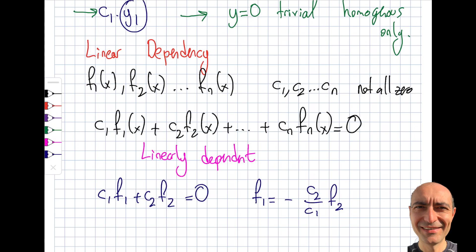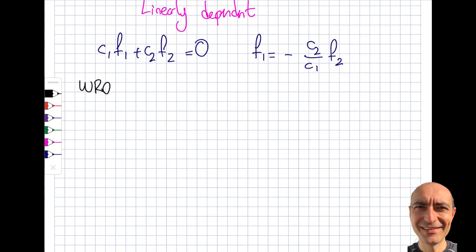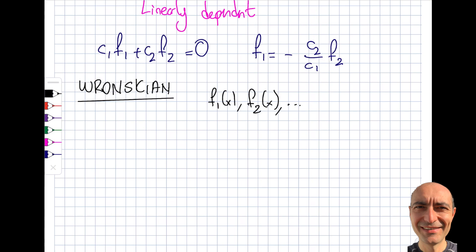The next concept I want to introduce may seem new depending on what you've studied before. It's called the Wronskian — named after a Polish mathematician. I've been corrected on the pronunciation by a Polish student but still can't say it properly. The Wronskian quantifies whether functions are linearly dependent or independent.